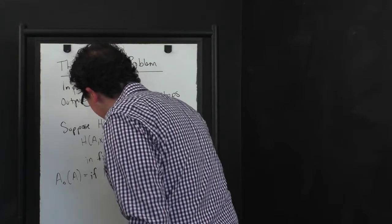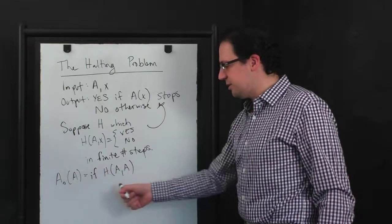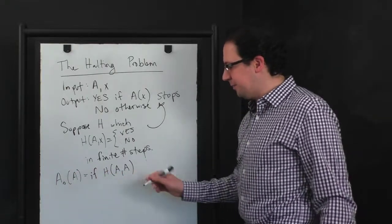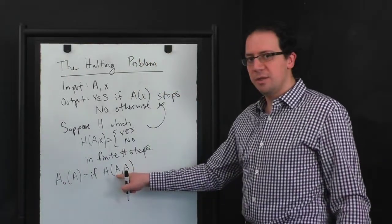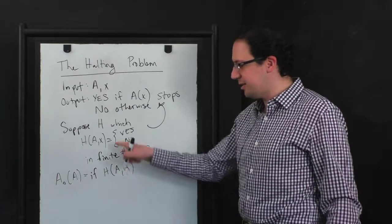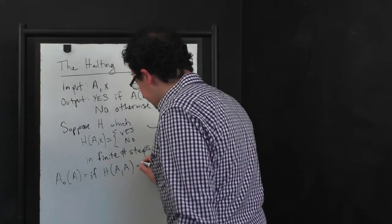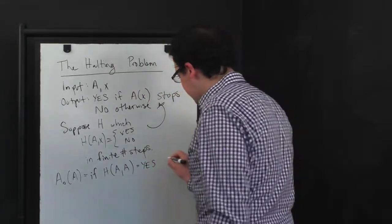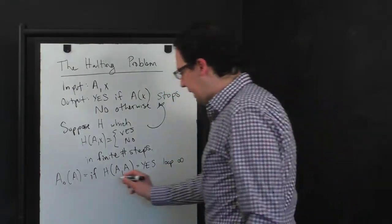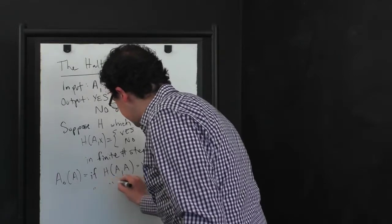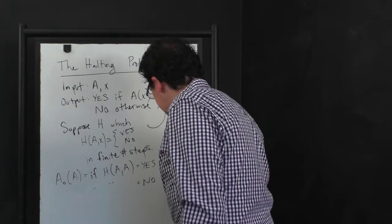It runs H, right? H is a valid program, so certainly we can use H as a subroutine in A0. It runs H on AA, meaning it's treating A here both as the program code and as the input X that's going to get fed into A. So if H of AA says yes, then A0 is going to enter a simple loop and loop forever. And if H of AA says no, then this algorithm is just going to stop.